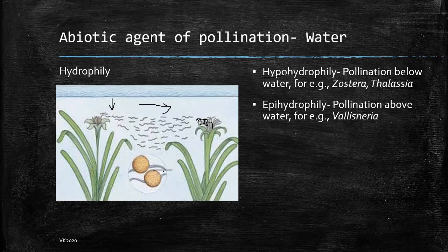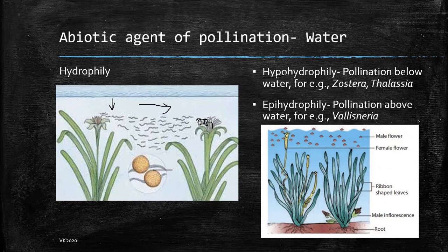Then we have epihydrophily, wherein the pollen grains travel just on the surface of water — for example in the male inflorescence of Vallisneria. The male inflorescence is tiny and not really reaching the surface of water, but the pollen grains are light enough and travel to the surface. Normally the female carpels are coiled and present below the surface of water. But when the fertilization period starts, the coil opens and the carpel travels to the surface of water, where it comes in contact with the pollen grain and gets fertilized.